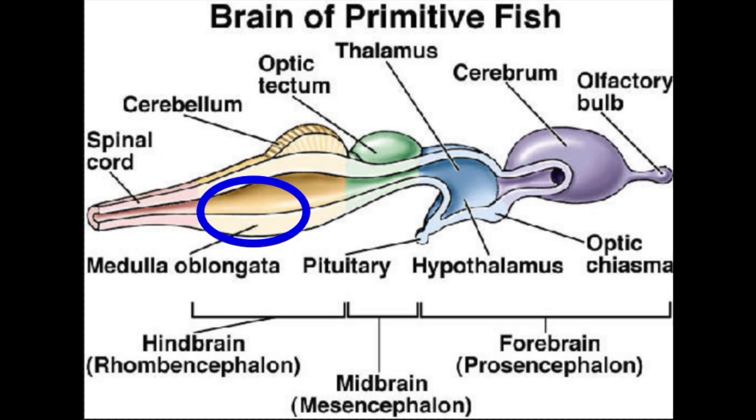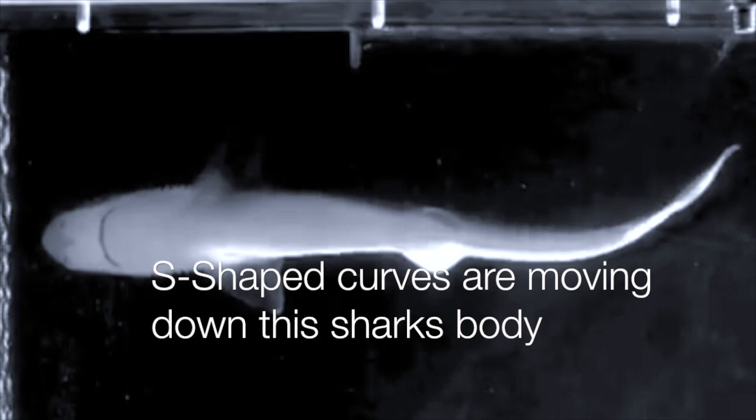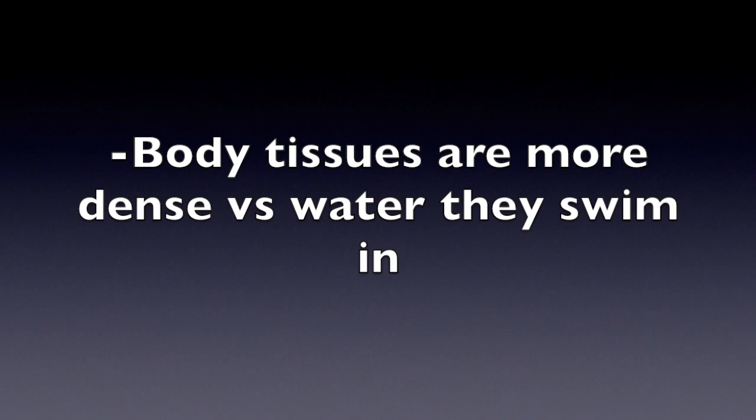Most fish move by alternately contracting paired sets of muscles on either side of the backbone, creating S-shaped curves that move down the fish's body. This force is what propels the fish forward. Because their body tissues are more dense than the water they swim in, sinking is an issue for fish who are cartilaginous.